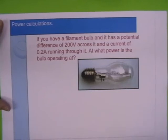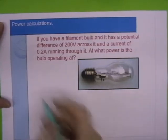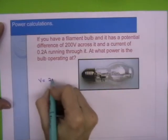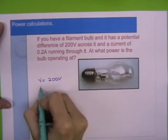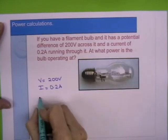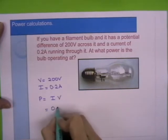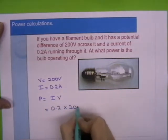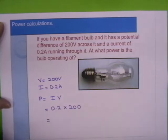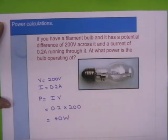So there's a power calculation. If you have a filament bulb and it has a potential difference of 200 volts across it, and a current of 0.2 amps, at what power is the bulb operating at? So P equals I times V, which is 0.2 times 200, and the answer is equal to 40. And the unit is watts.